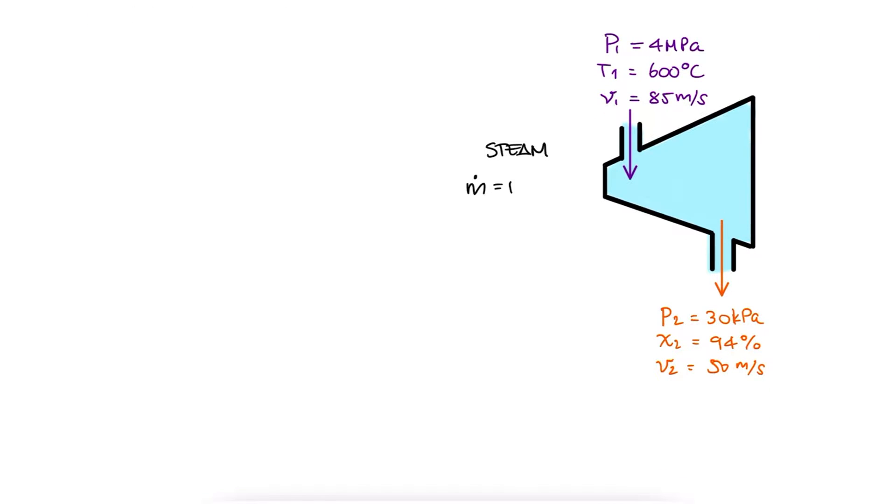The mass flow rate of steam is 12 kilograms per second. What is the change in kinetic energy, the power output and the turbine inlet area?